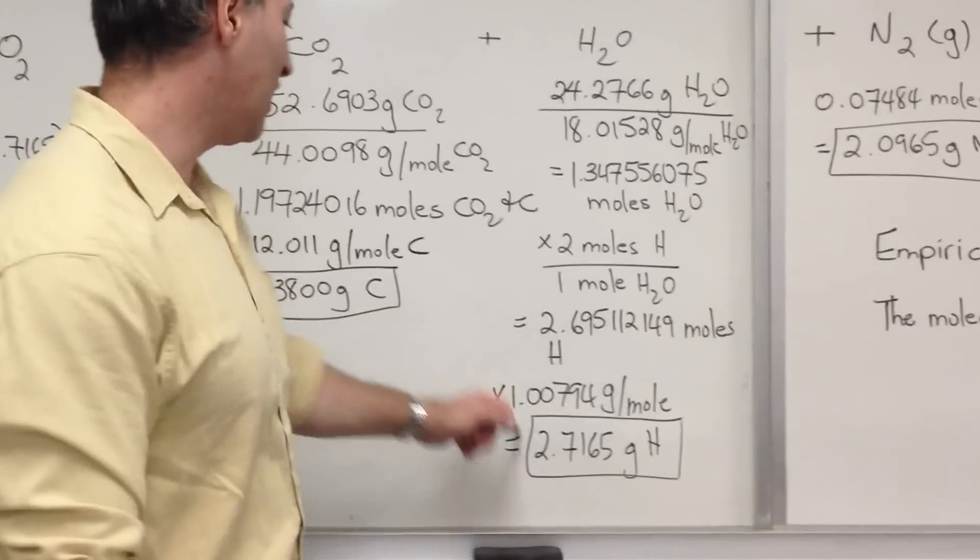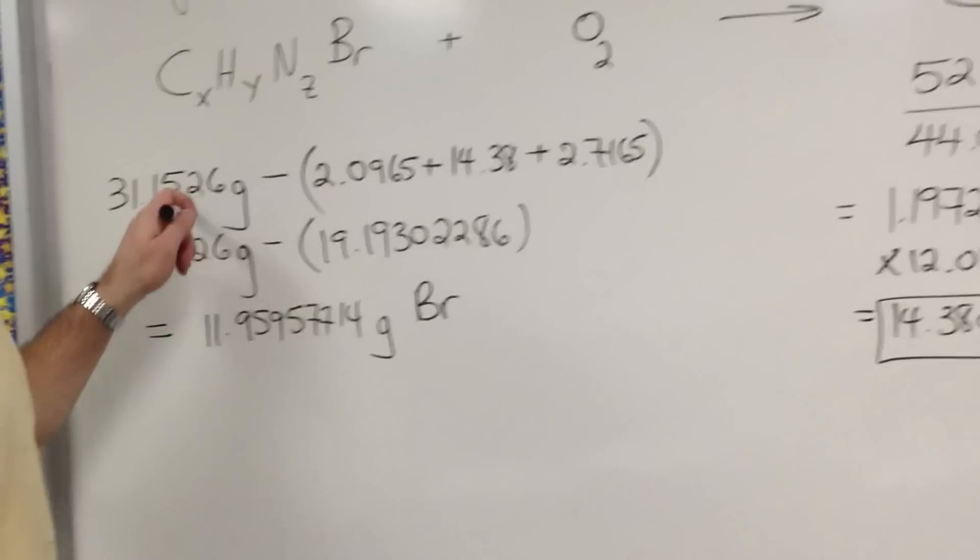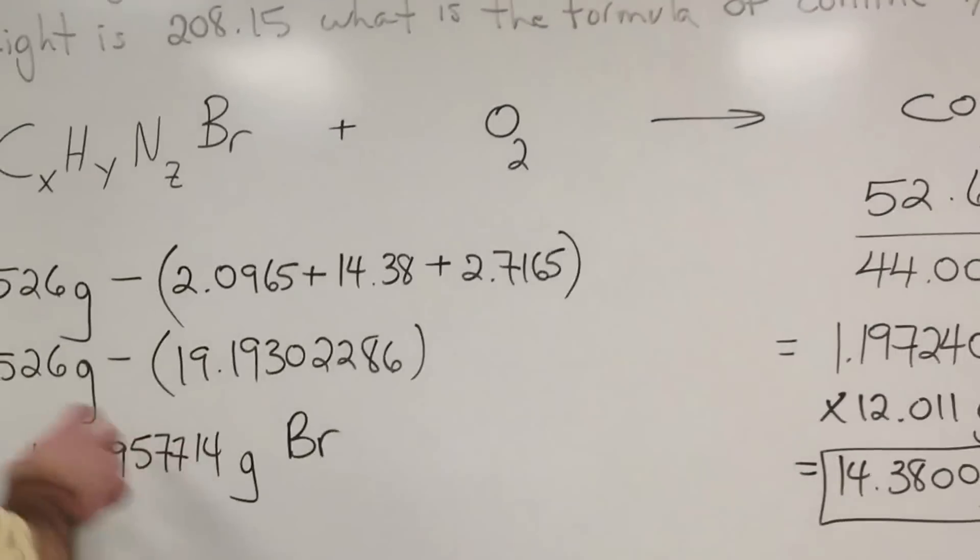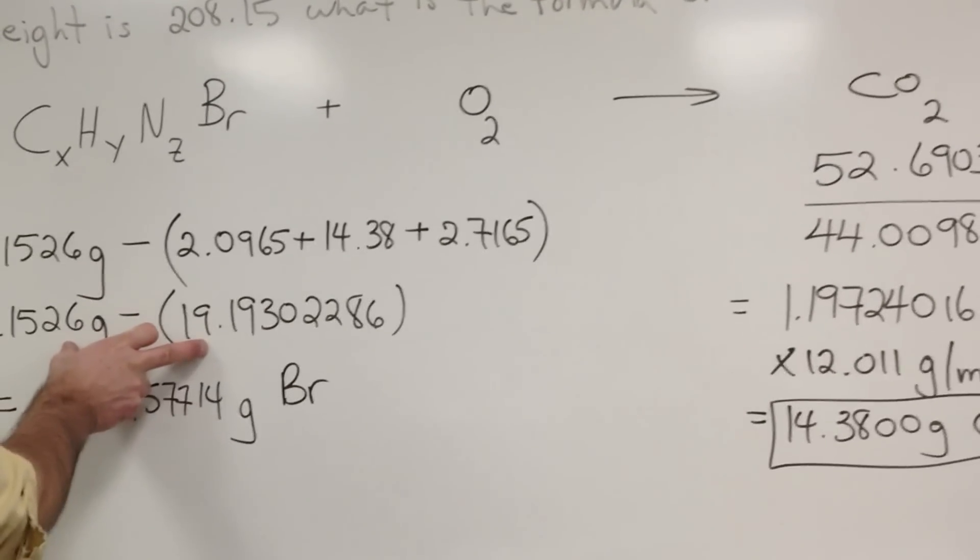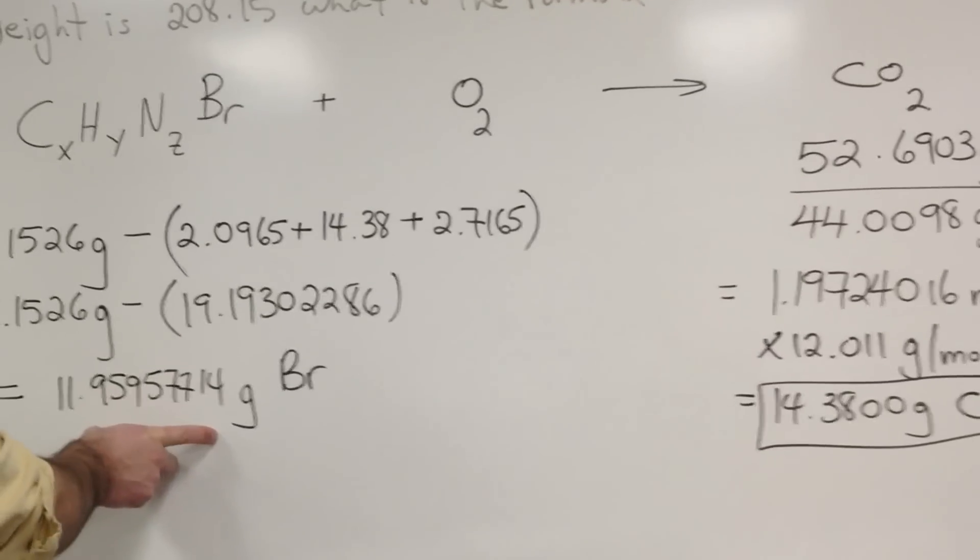Now what we do is we take these three quantities—carbon, hydrogen, and nitrogen—add them together to get this number. And we subtract it from the original amount, the original weight of the sample. Why do we do that? Because the difference between these two numbers gives us the amount of bromine that was present in the sample.